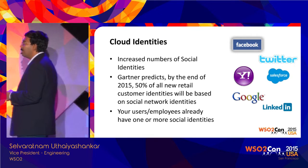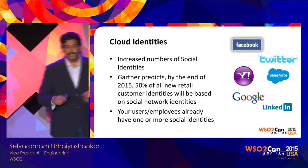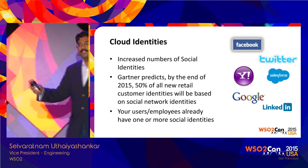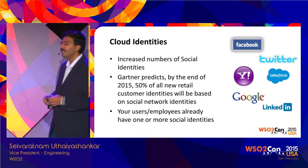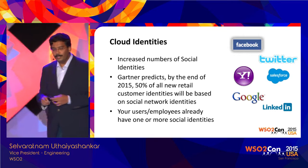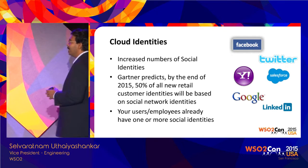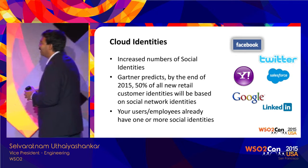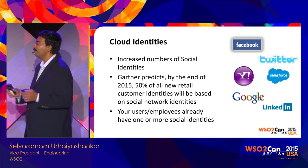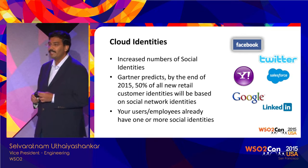The second question is why you can't avoid cloud identities. People are having an increased number of social identities — Facebook, Google, Gmail, and others. Gartner predicted — this report came out one to two years back — that by the end of 2015, 50 percent of retail customer identities would be based on social network identities.